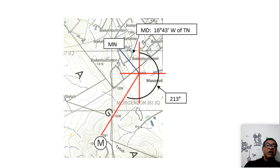I come down here. My magnetic declination is in this area. It was 16 degrees 43 minutes. It's an angle between the true north and the magnetic north. My true bearing was 213 degrees.